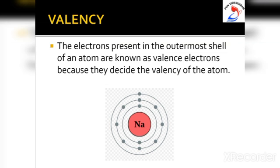The electrons in the two inner shells — the K shell and the L shell — of the sodium atom never take part in chemical reactions. We can say that those electrons of an atom which take part in chemical reactions are called valence electrons, and they are located in the outermost shell of an atom.